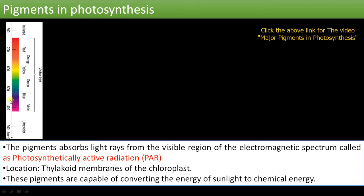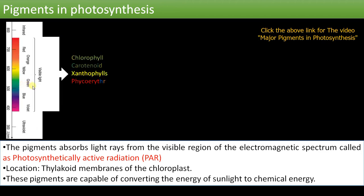This visible region, from 400 to 700 nanometers, is called photosynthetically active radiation or PAR. This region is absorbed by plant pigments like chlorophyll, carotenoids, xanthophyll, phycoerythrin, and phycocyanin.